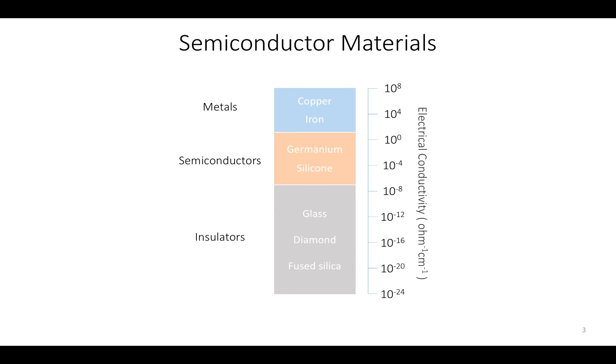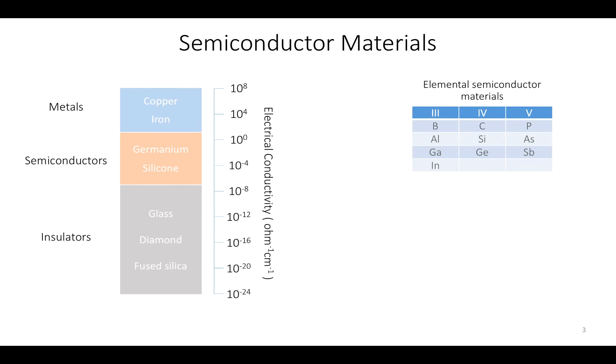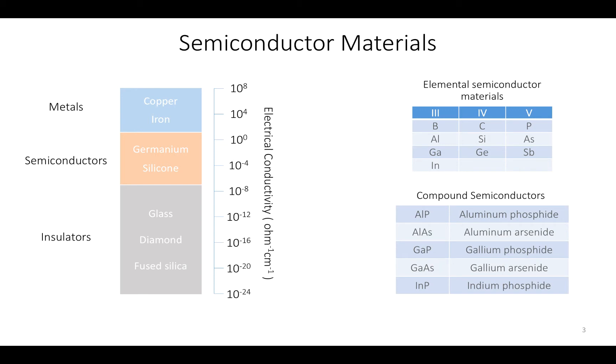Two classifications of semiconductors are the elemental semiconductor materials found in the fourth group of the periodic table, and the compound semiconductor materials, most of which are formed from special combinations of third and fifth group elements. The elemental materials, which are composed of single atoms, are silicon and germanium. Silicon is by far the most common semiconductor material used in integrated circuits.